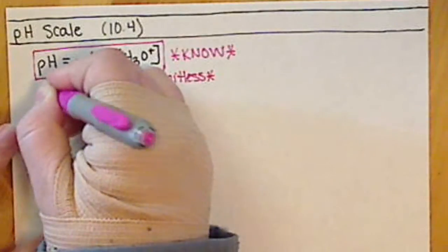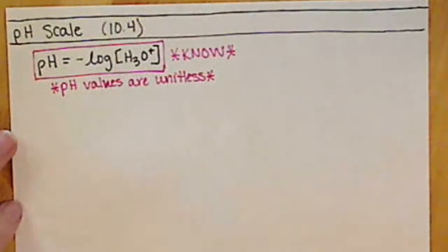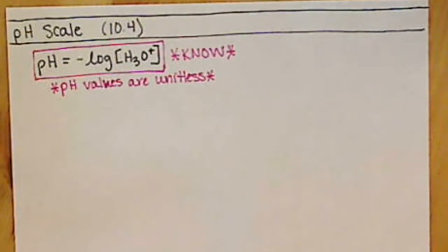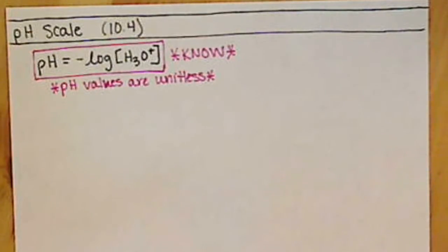The only two values in this course that don't require a unit with them are your equilibrium constants and your pH values.